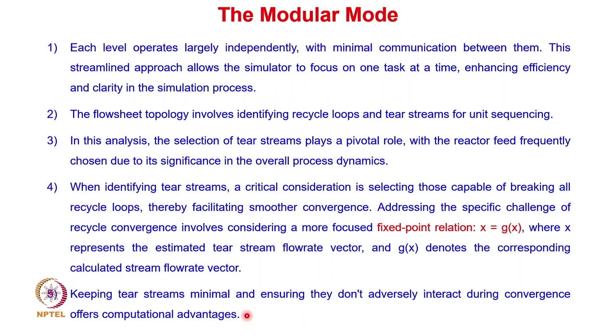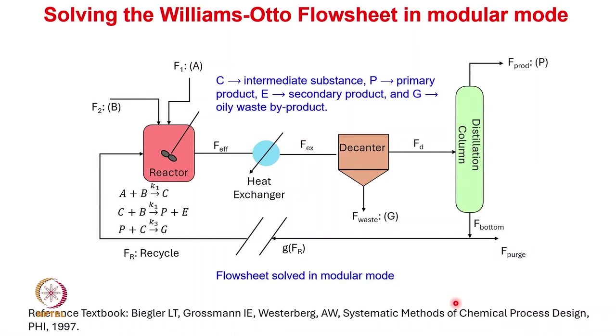Keeping tier streams minimal and ensuring they don't adversely interact during convergence offers computational advantage. Minimizing the number of tier streams and selecting the most reasonable ones is very important. To solve the Williams-Otto flow sheet in modular mode, we break the recycle loop — selecting the reactor inlet as the tier stream — and then solve sequentially in the forward direction.